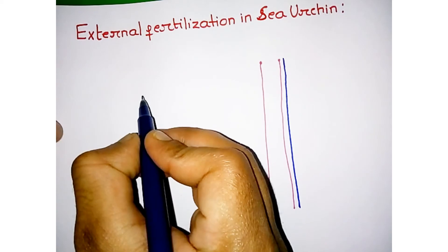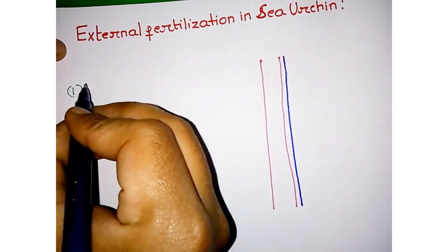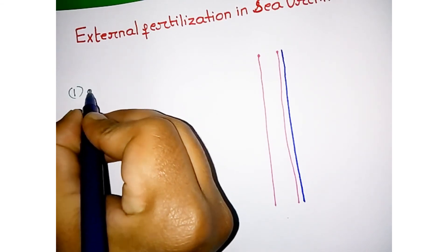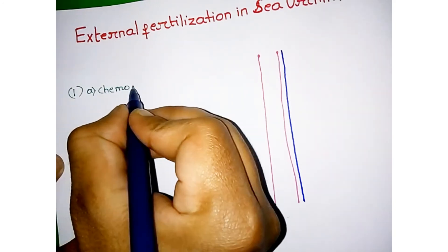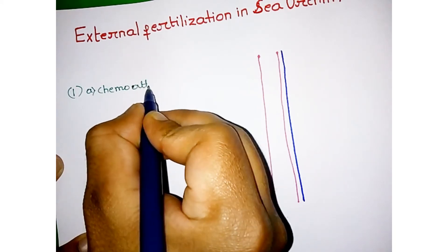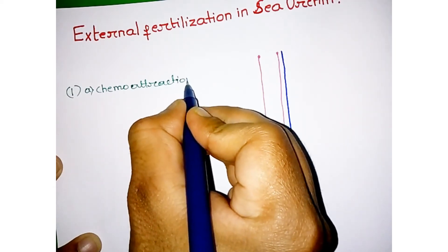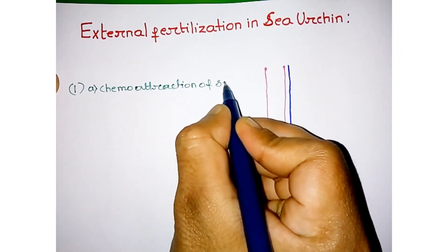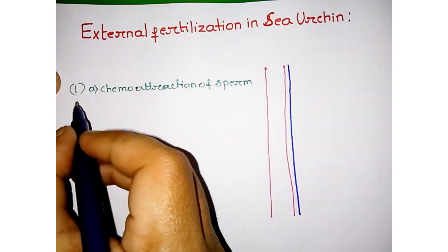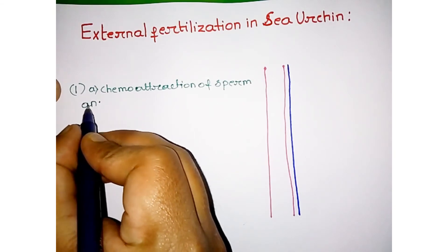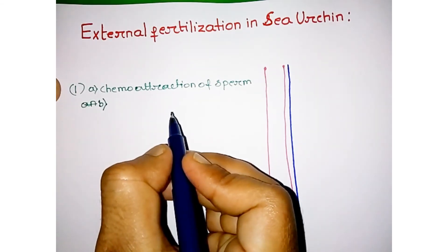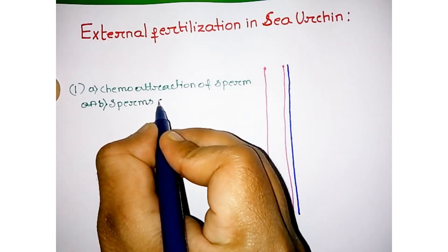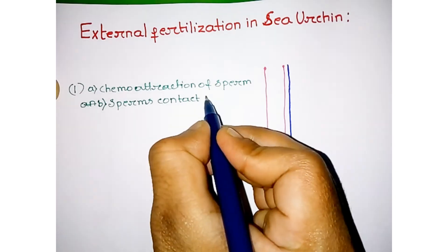In the first step, what happens is chemo attraction. We divide the first step into two parts: first, chemo attraction of sperm, and second, sperm contact with the jelly layer.